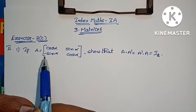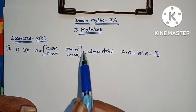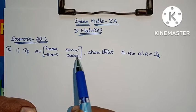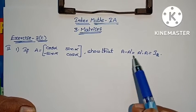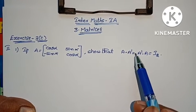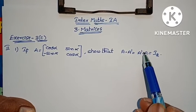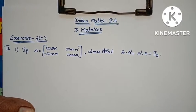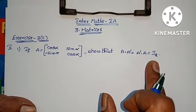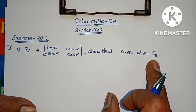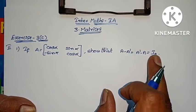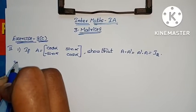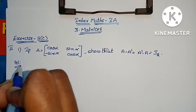That will be the first problem. If A equals to [cos α, sin α; -sin α, cos α], show that A into A transpose equals to A transpose into A equals to I₂, which is the 2 by 2 identity matrix. Solution given.